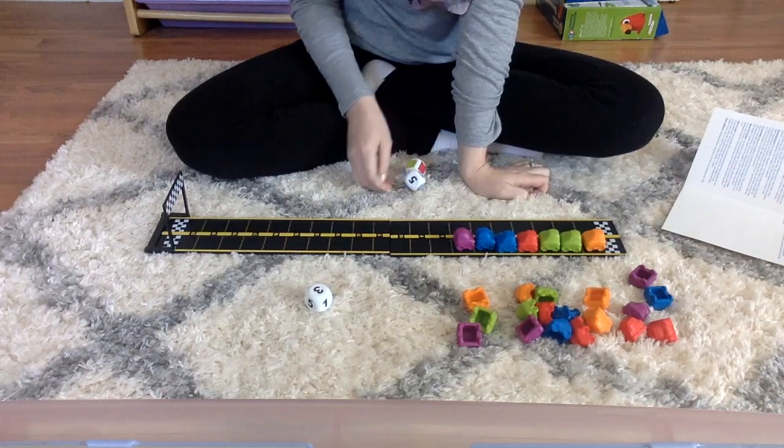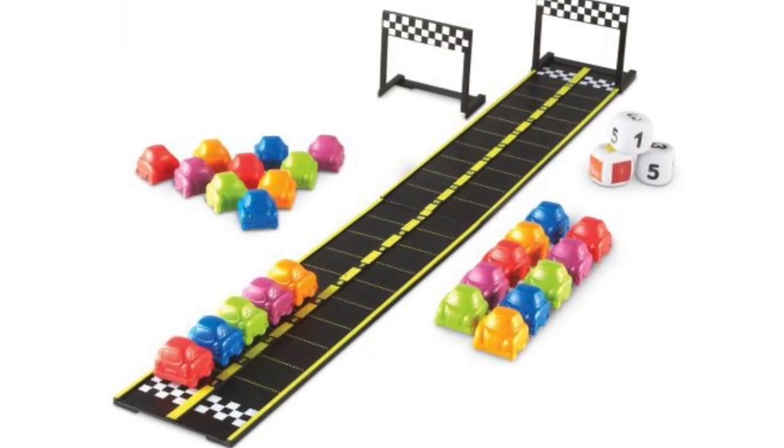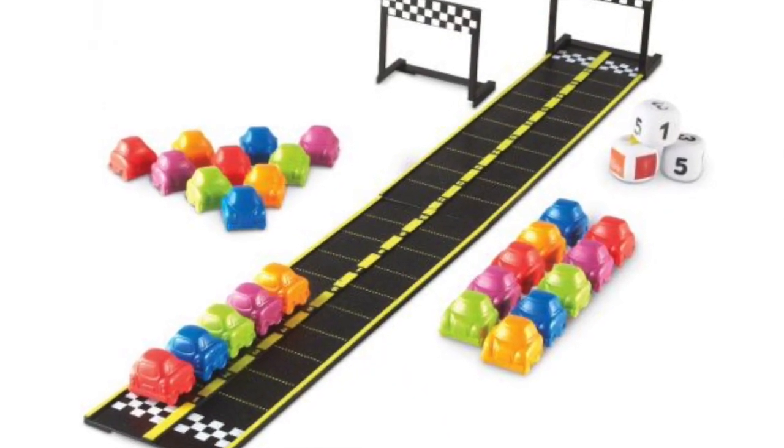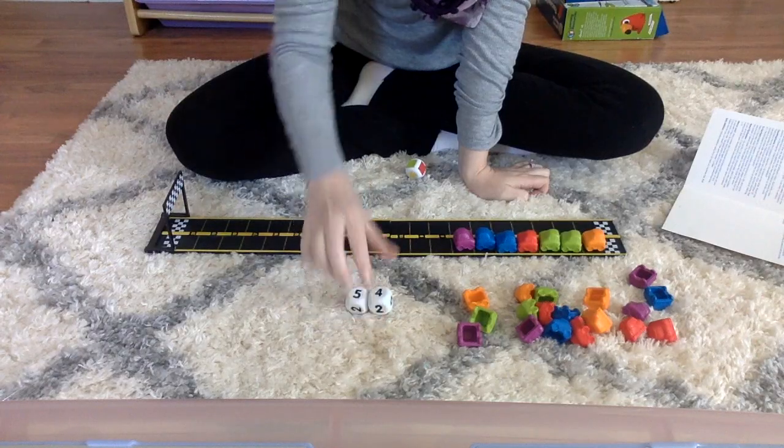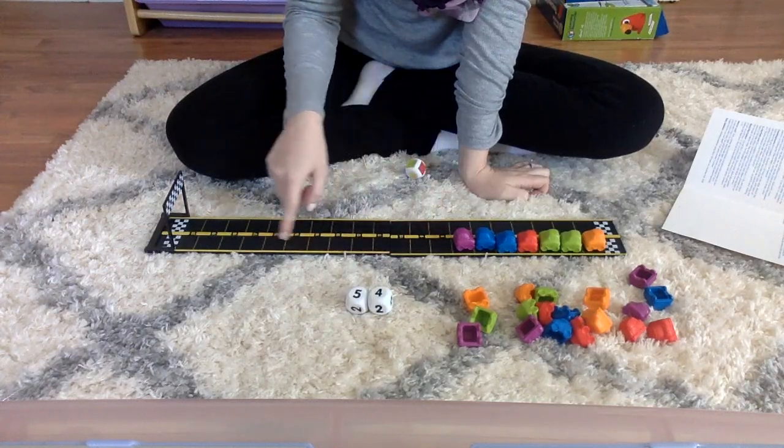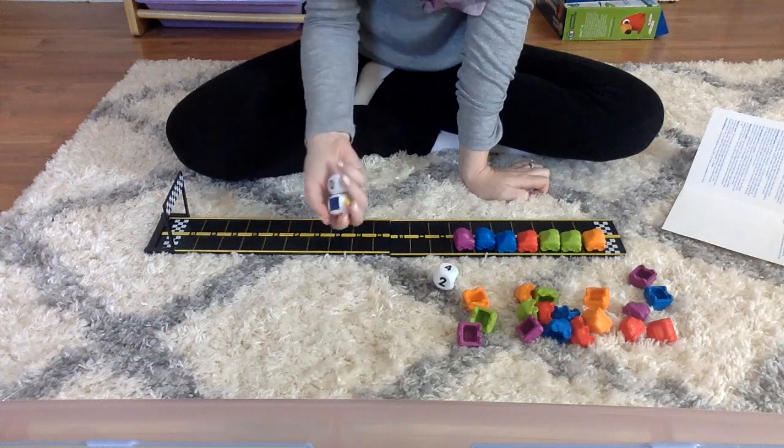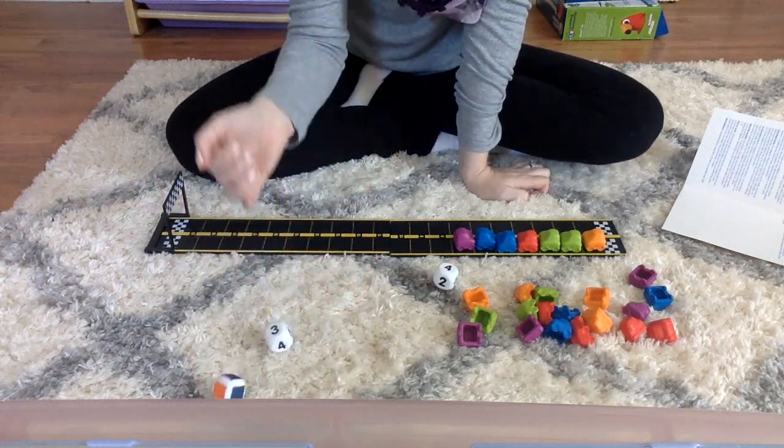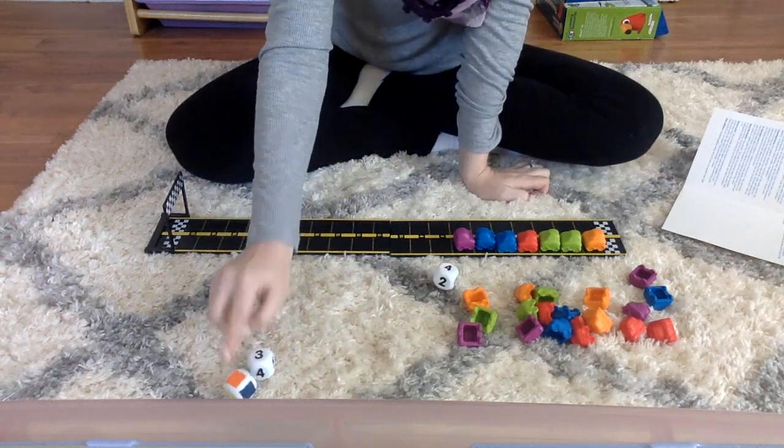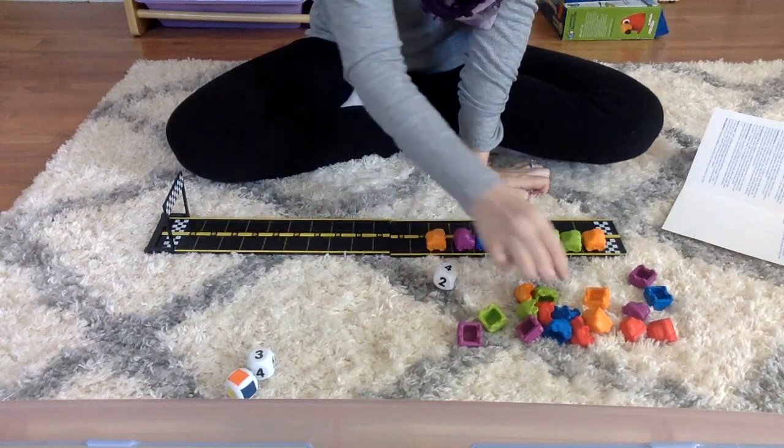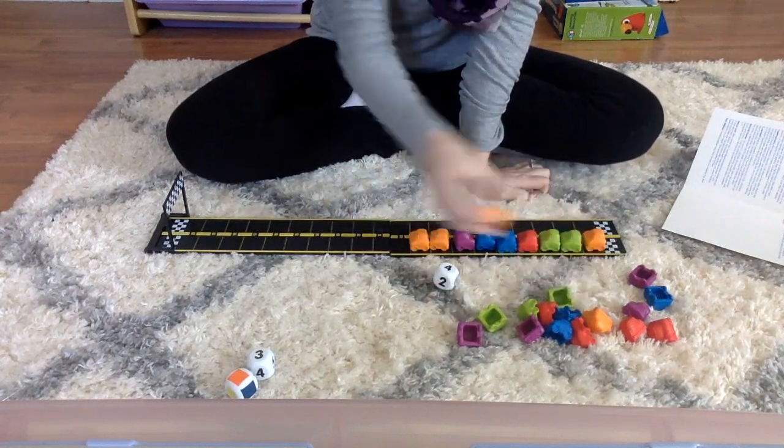You can make the game more difficult by rolling two dice. I got five plus four, so I could add nine cars to the roadway. Or you could use the color die and roll three orange, adding three orange cars to the roadway.